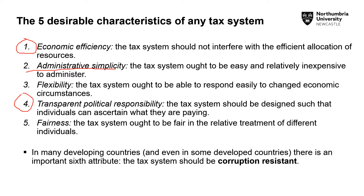A tax system needs to be fair in the relative treatment of individuals — those that earn more pay more, and those that earn less pay less. In many developing countries, there is an important sixth attribute: the tax system should be corruption resistant. If there are high levels of corruption, there is always the risk of a tax revolt, and taxes that are paid do not find their way to the programs they should — instead going into politicians' pockets. Having lived in a developing country, I have seen this firsthand.